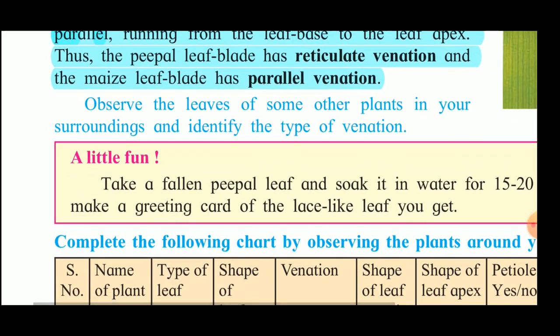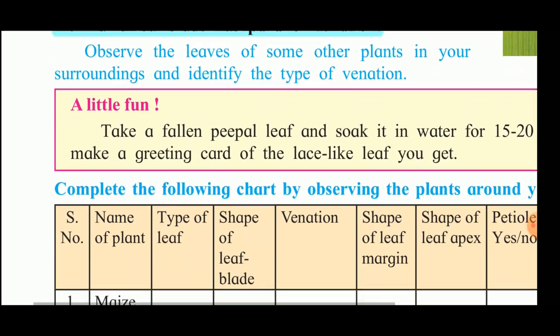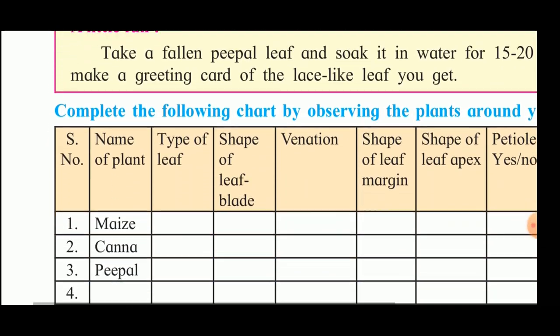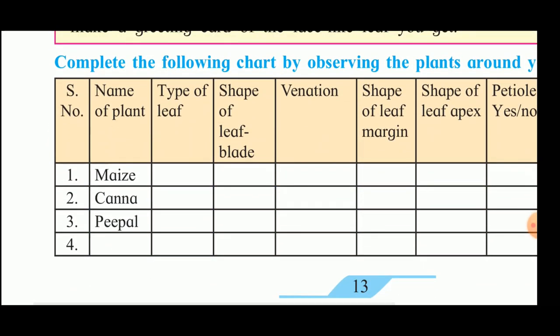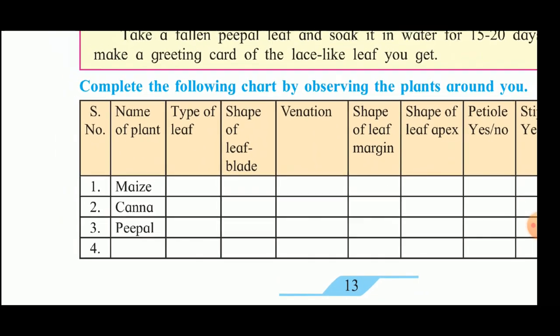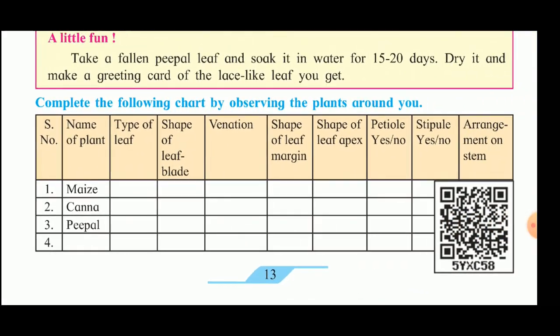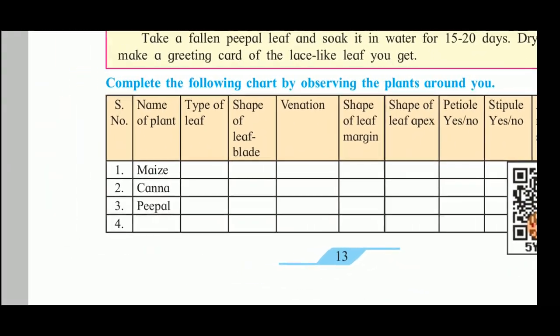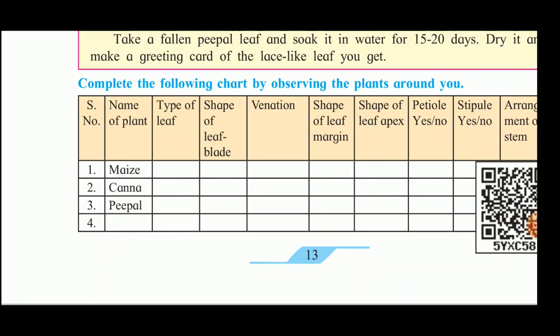Next we will see this table. This table you will complete by observing the plant - means the maize plant.